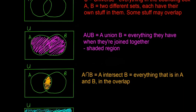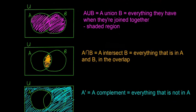Next thing we have to look at is the union. So A∪B is A union B and that means everything they have when they're joined together. So everything in the shaded region, that's A union B. It's the bit in just A, the bit in A and B, and the bit in just B.